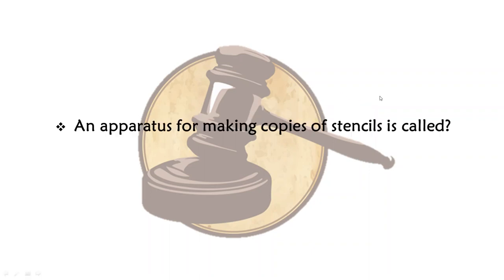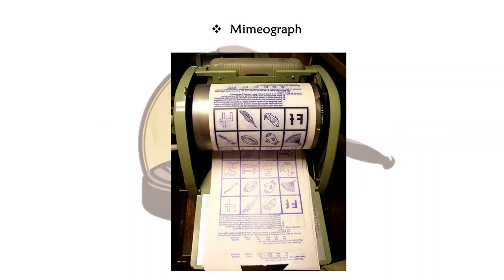Next we have: an apparatus for making copies of stencils. Basically this is a machine which makes copies of stencils. The answer is mimeograph.